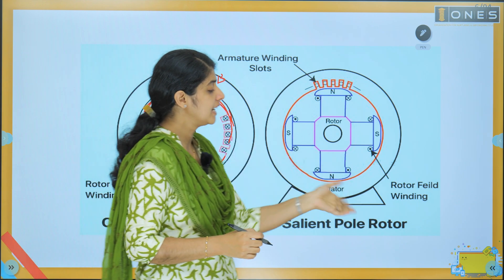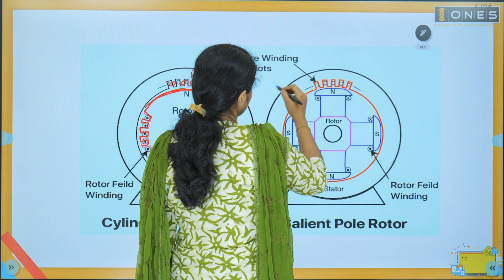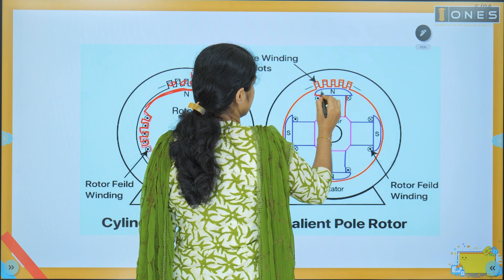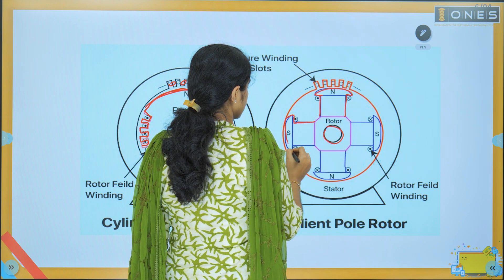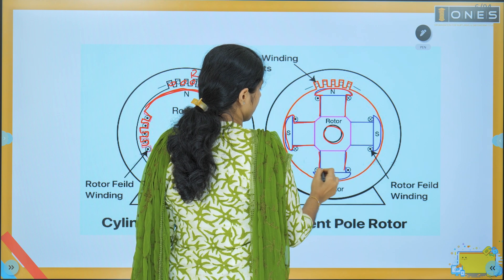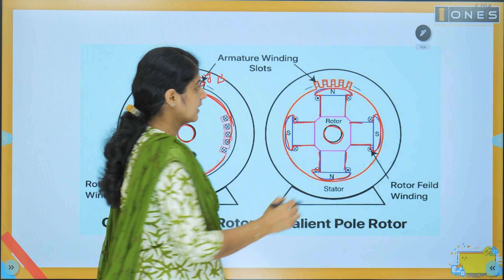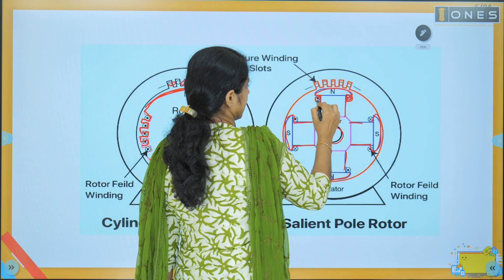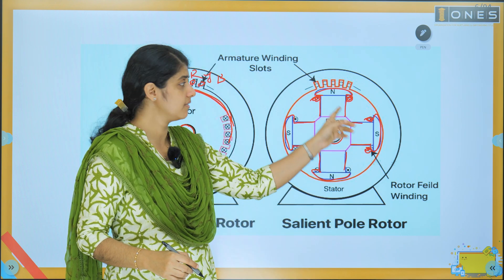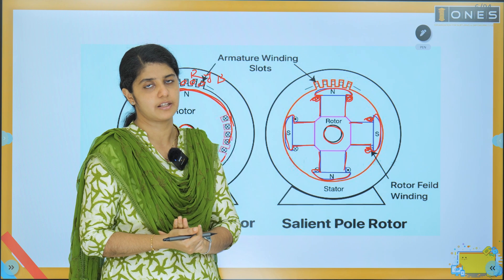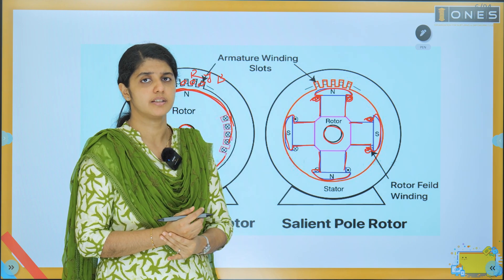Now, the next type is the salient pole rotor. This salient pole rotor has a stator. The structure is a salient pole with a shaft. The field windings are placed in the correct direction, and these windings create north and south poles.